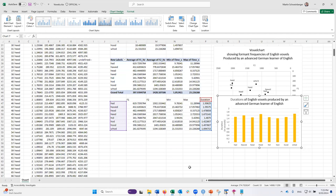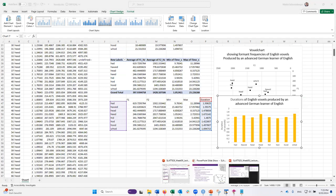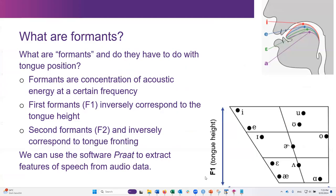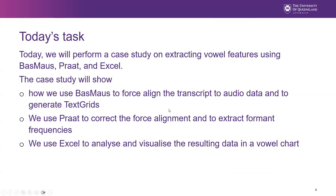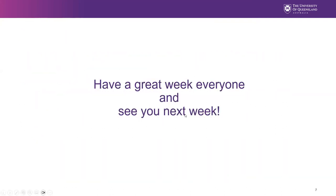So, to summarize: we used BuzzMouse to force align the transcript and the audio data and to generate text grids. We then used Praat to correct the force alignment and to extract the formant frequencies, as well as the times and thus the durations. Then we used Excel — not to analyze but to visualize the resulting data in a vowel chart. That was it for this week's lecture. We're going to practice what you've just seen in the tutorial, and we might also look at certain consonant features. I hope you enjoyed it, learned something, and had fun. Have a great week, everyone, and see you next week.